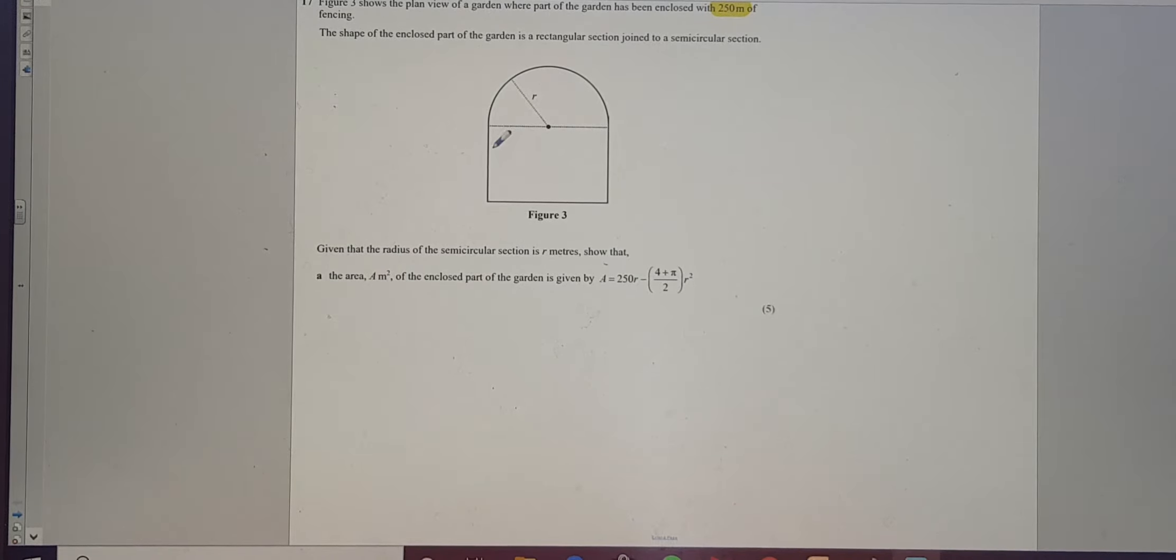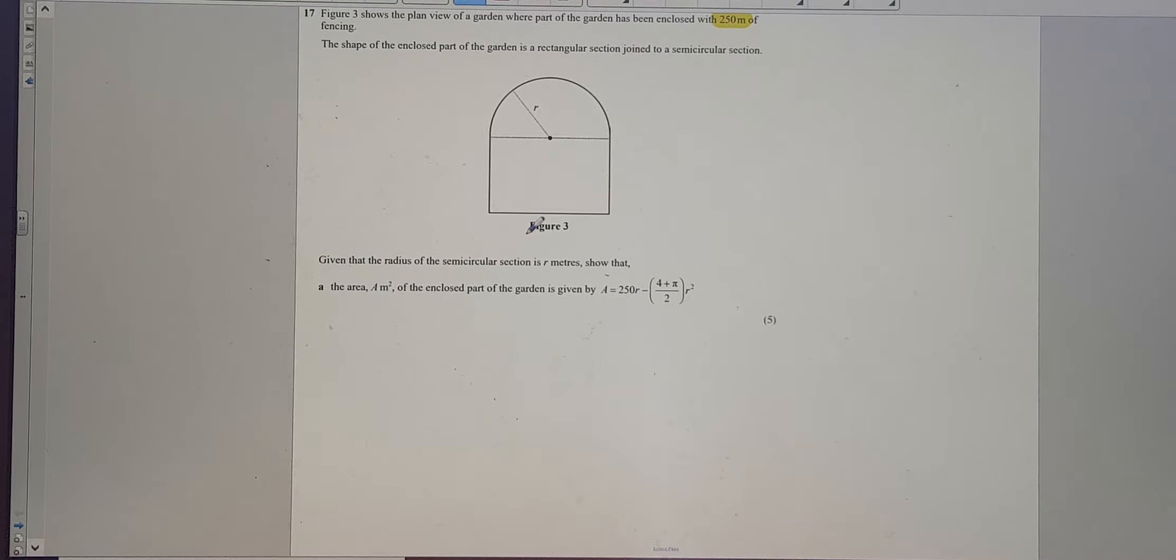So, I need the perimeter. If this is the radius here, then that's obviously the radius. Therefore, that will be one lot of the radius, that will be another lot of the radius. I know that the length across the bottom, let's do it in red, is 2r.